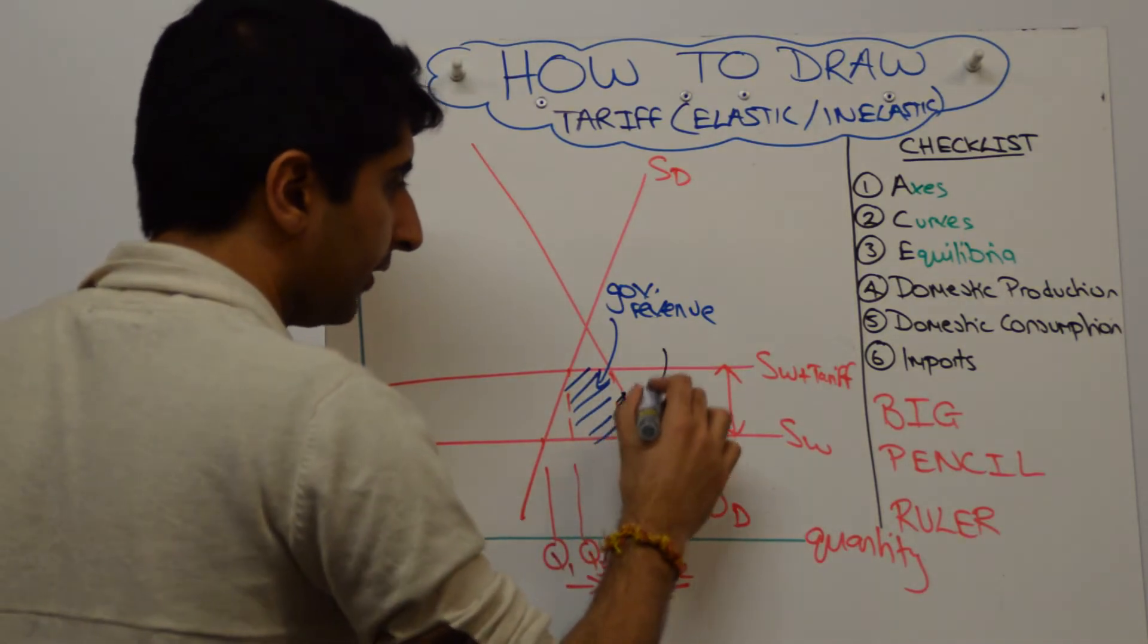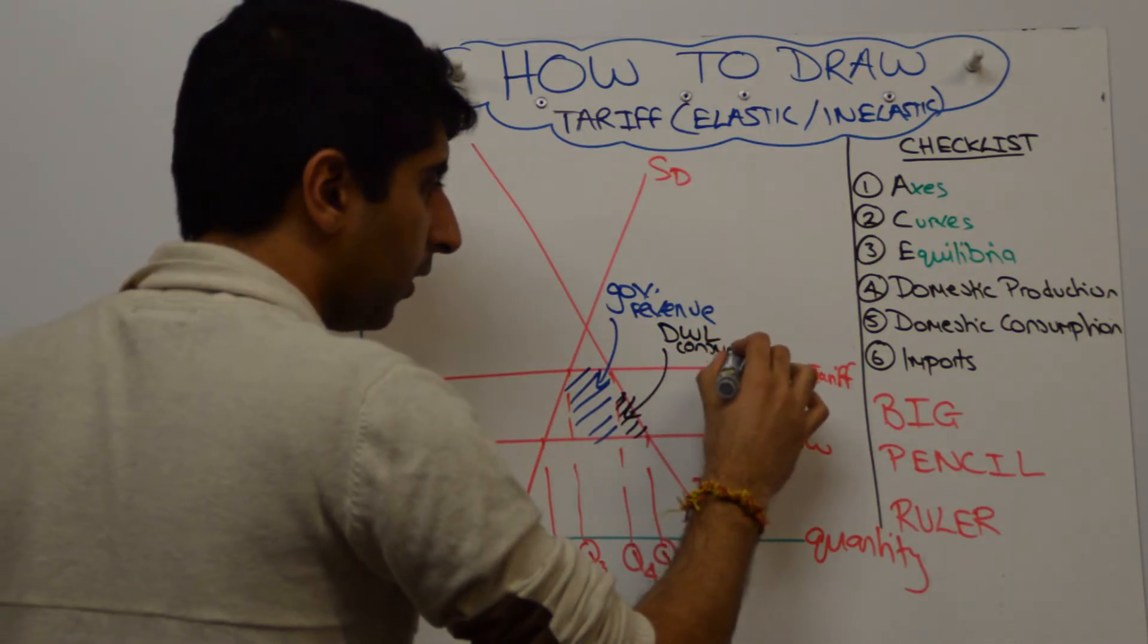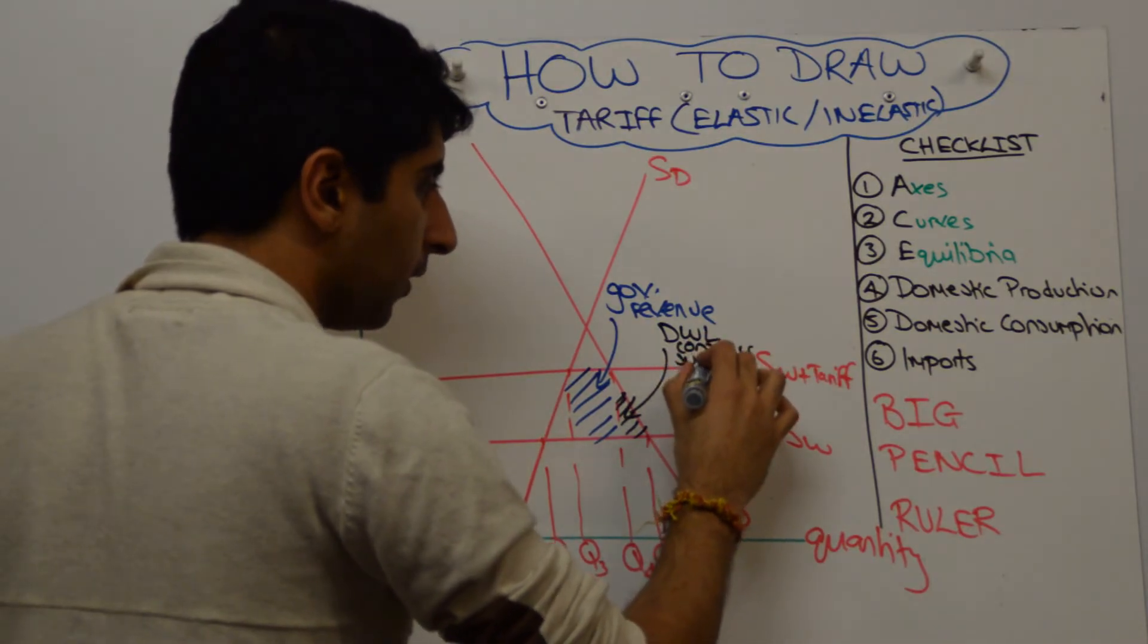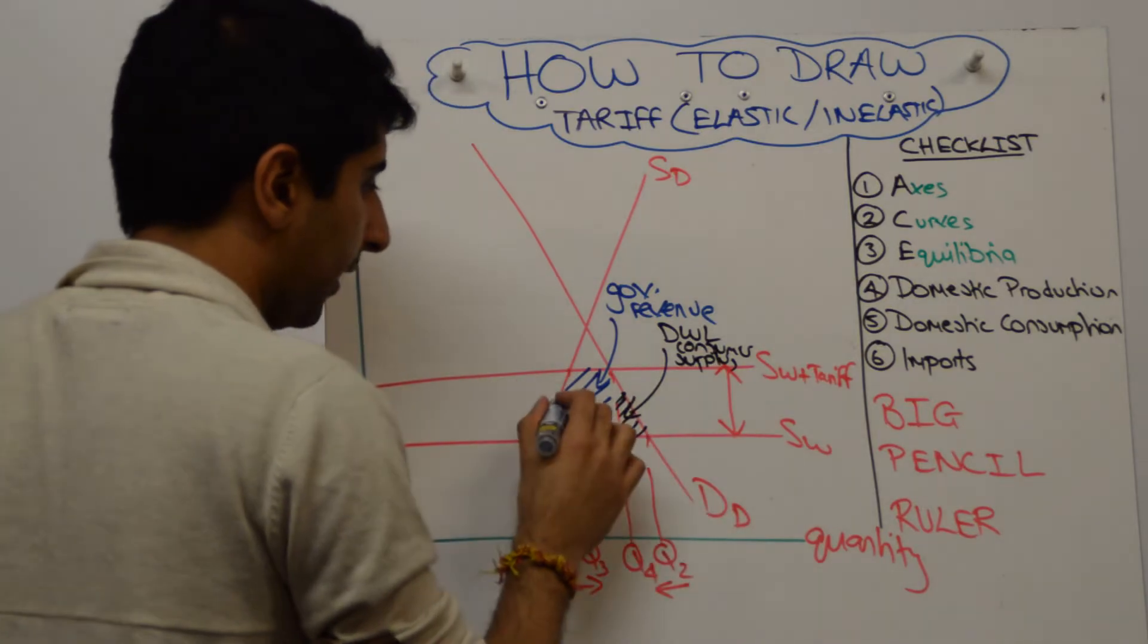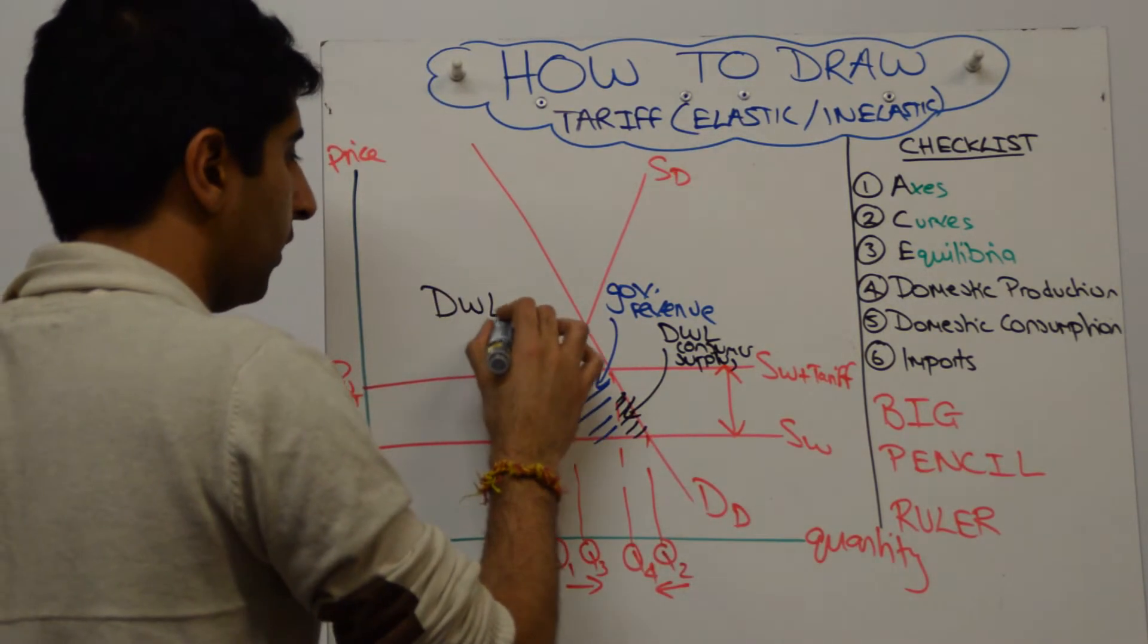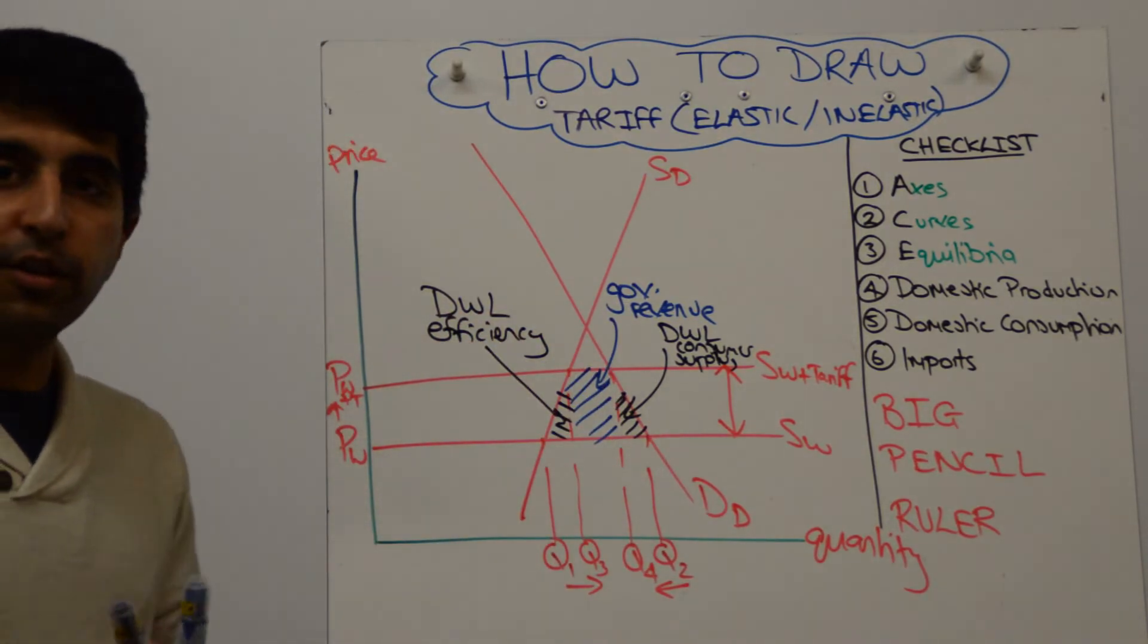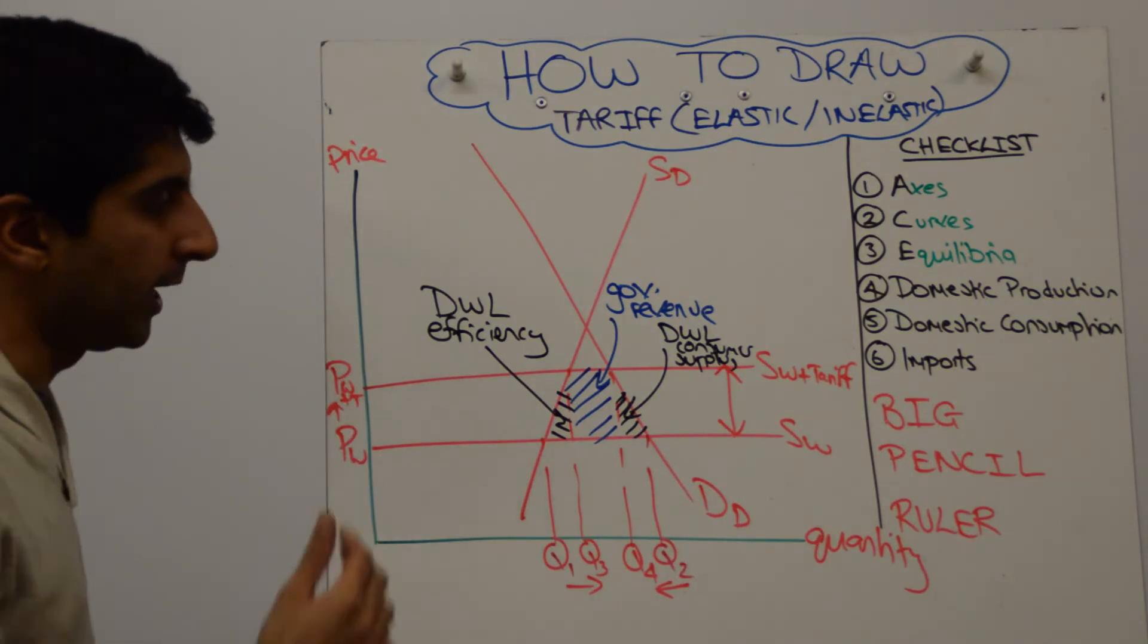Okay, so we have a deadweight loss of consumer surplus. And this other triangle here on the side is a deadweight loss of efficiency. All right, so the same three labels that we're used to drawing right here.